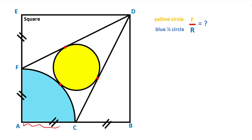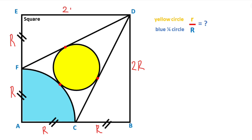Let's call this length capital R. So here is also R, and this length is 2R; here is R, here is R, and this length is also 2R. Now if you focus on this triangle...